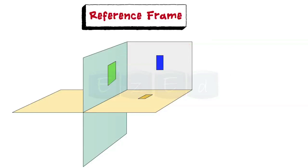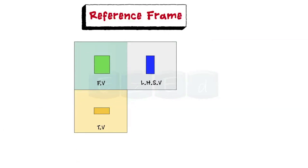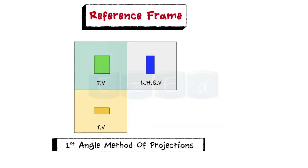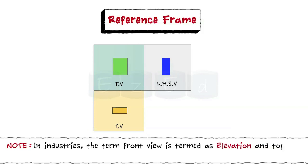When the object is in the first quadrant, the actual pattern of planes and views is shown. This is known as the first angle method of projections and is represented as shown. In industries, the term front view is termed as elevation and top view is termed as plan.